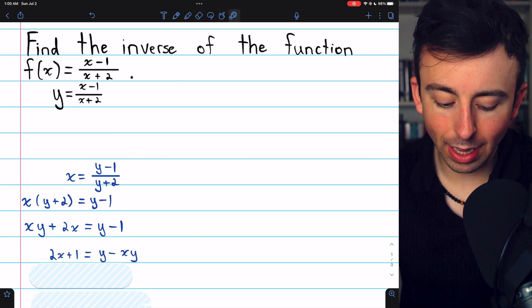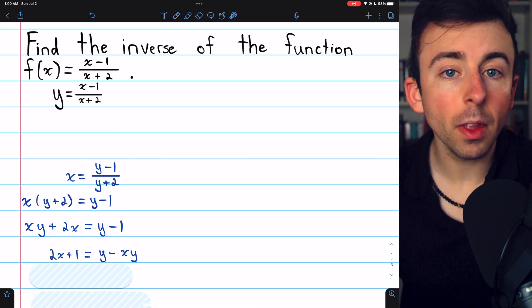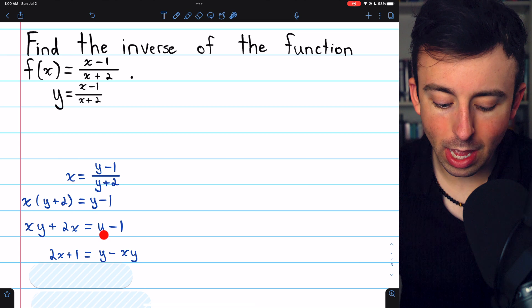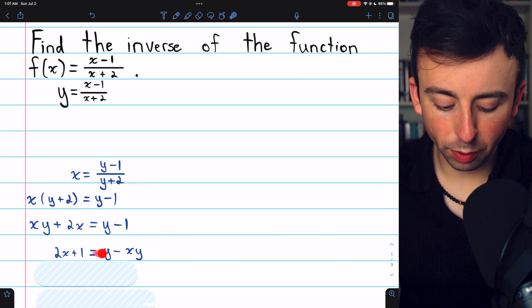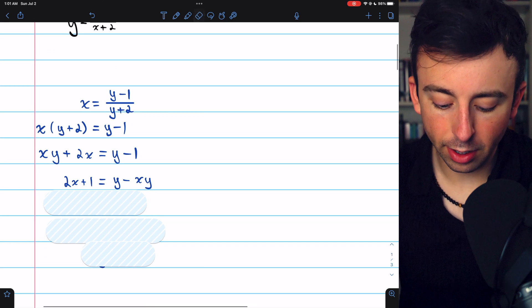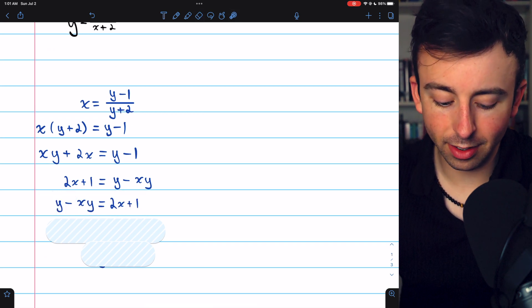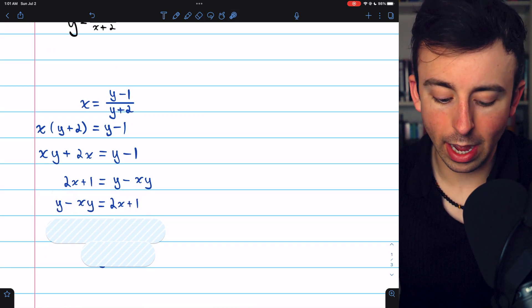When we do that, we'll now have 2x plus one on the left. And on the right, we have y minus xy. Now let's just flip the way we've written this equation so that the y's are on the left side. Still the same equation, we just put the y's over here.